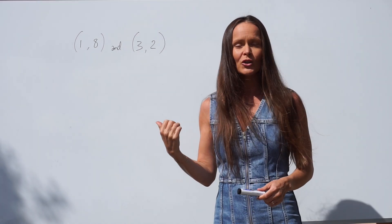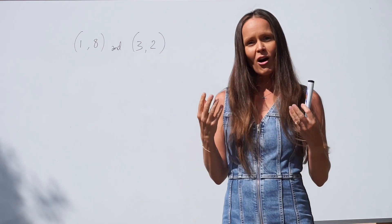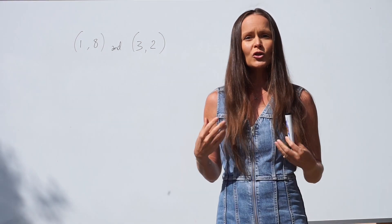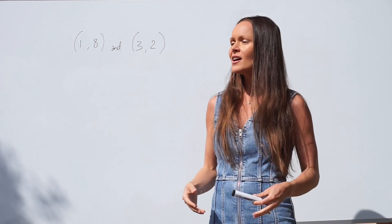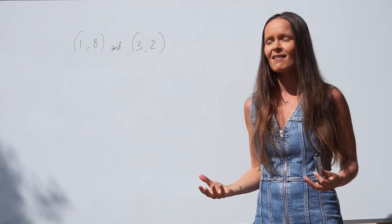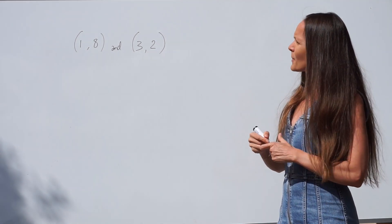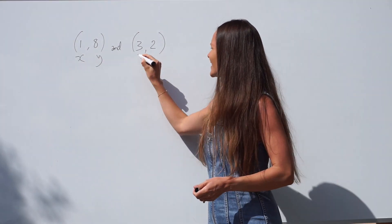They might be given to you straight away like this, or you might be given the graph itself and then you could choose two points along that line, any two points, to work out the equation. Just pretend that these are the two points that you picked off that line. Remember when you write down coordinates, x is the first value and y is the second.